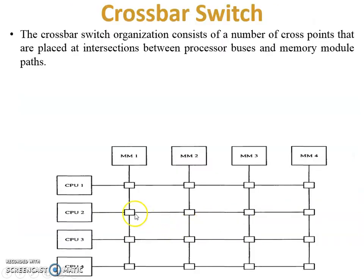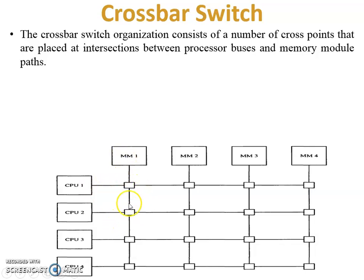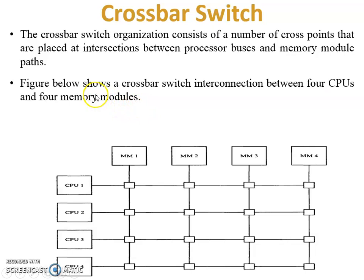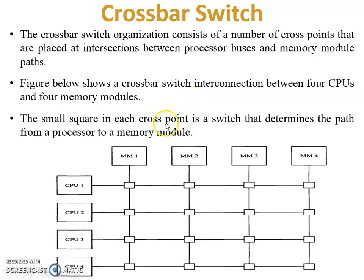This diagram shows the crossbar switch. The crossbar switch organization consists of a number of cross points. You can see that this is the cross point where CPU 1 and memory module 1 are connected — they are placed at intersections between processor buses and memory modules. Cross points are used to join a memory module and a CPU. For example, CPU 3 uses this cross point to connect with memory module 2. The figure shows a crossbar switch interconnection between 4 CPUs and 4 memory modules.